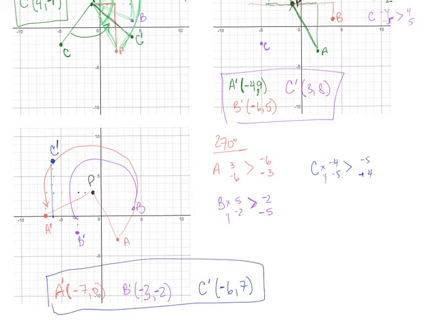This process is a little difficult for rotations about a point other than the origin. Remember, we pretend the rotation point is the origin, find our distances, apply the switching and opposite rules, then use those new distances to determine the coordinate. It's rather involved — you might have to watch this a couple times before it sinks in. Practice these, and good luck with rotations, especially those not about the origin.